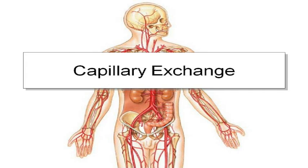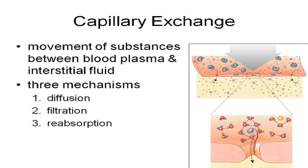Now we know how blood gets out of the heart and how it gets back to the heart. But this is where the party happens. Diffusion is the movement of materials from an area of high to low concentration. Just like blood goes from high pressure to low pressure, solutes move from high concentration to low concentration. And getting stuff across the wall of the capillary is what we're talking about: capillary exchange.